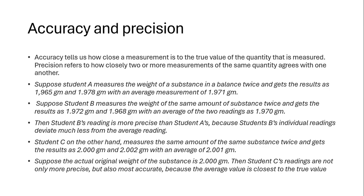What is the difference between accuracy and precision? Accuracy tells us how close a measurement is to the true value of the quantity that is measured. Precision refers to how closely two or more measurements of the same quantity agree with one another. Suppose student A measures the weight of a substance on a balance twice and gets the results as 1.965 gram and 1.978 gram with an average of 1.971 gram. Suppose student B measures the weight of the same amount of substance twice and gets the results as 1.972 gram and 1.968 gram with an average of 1.970 gram.